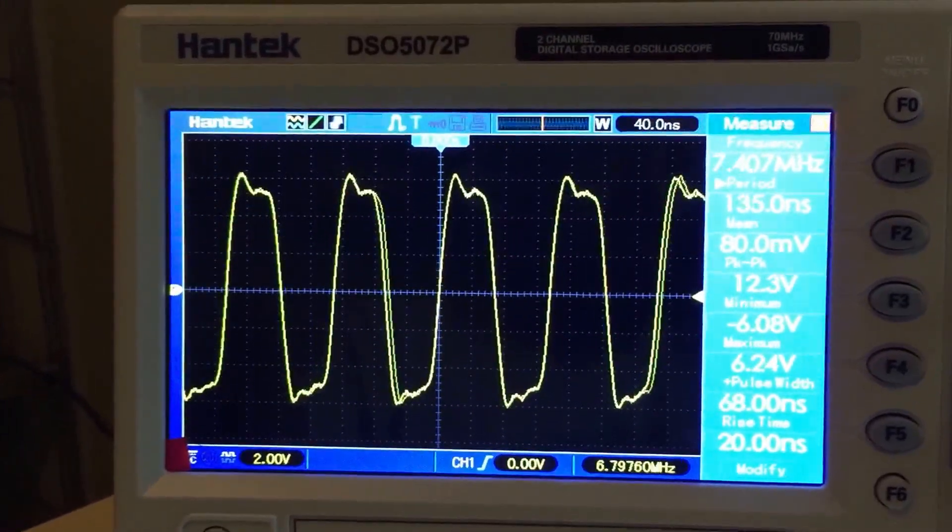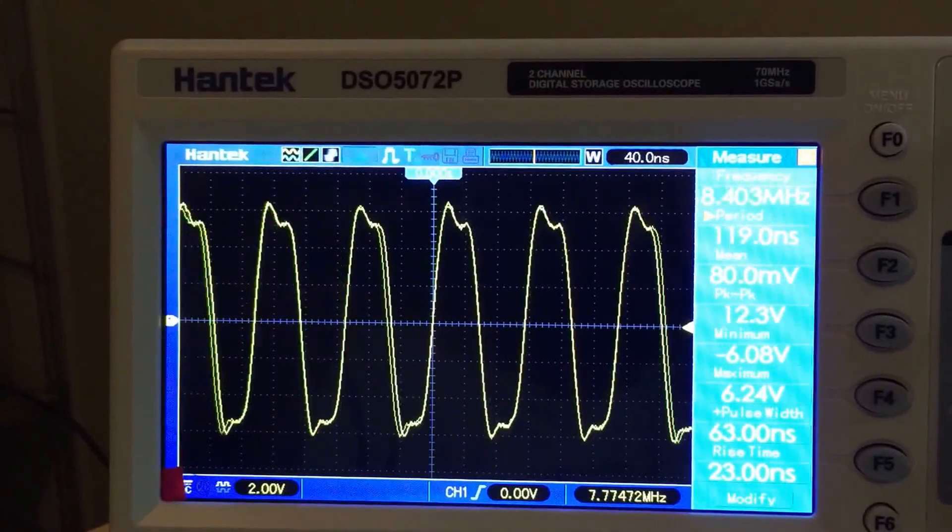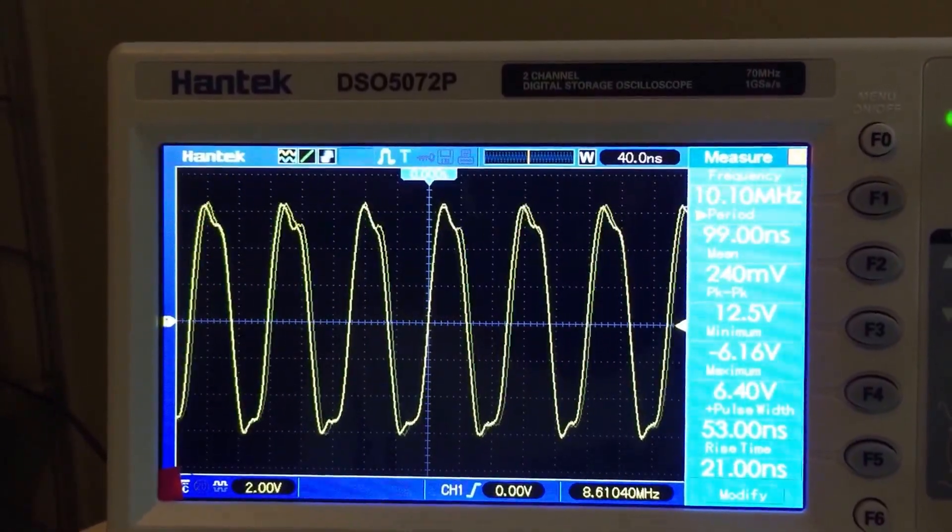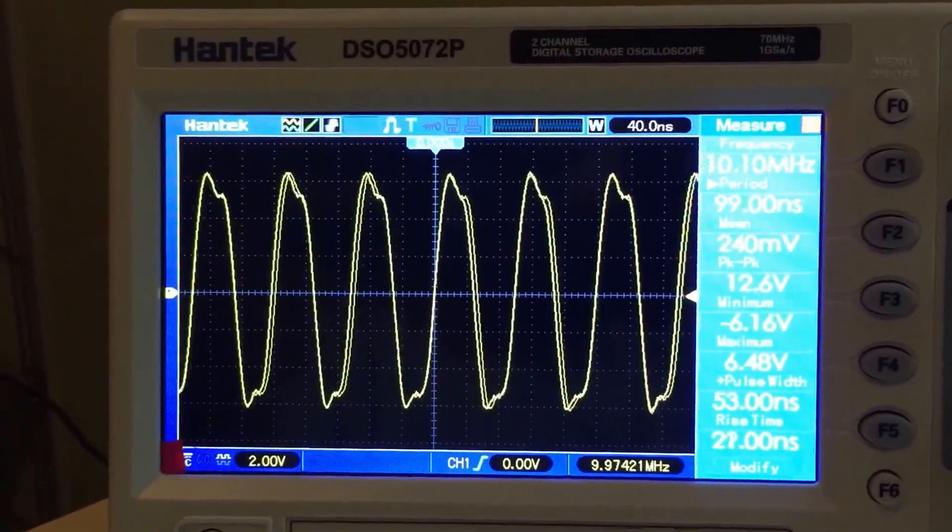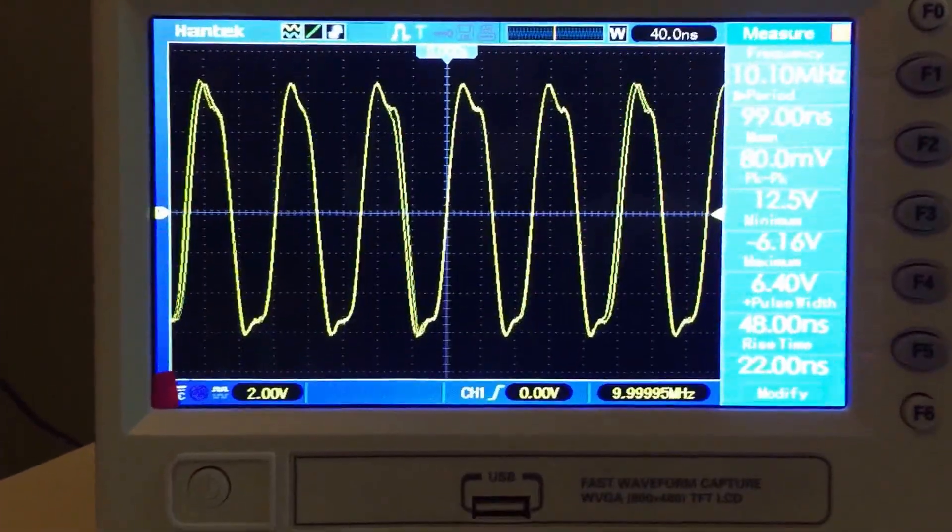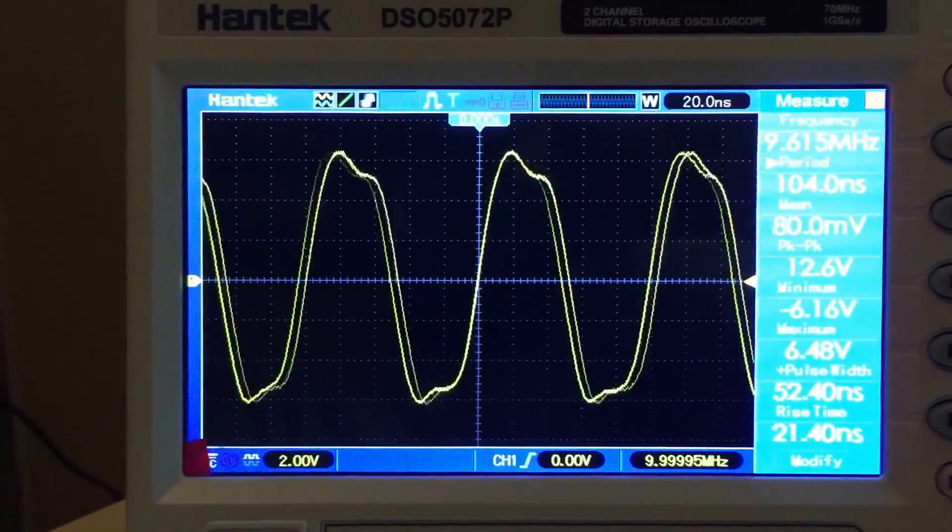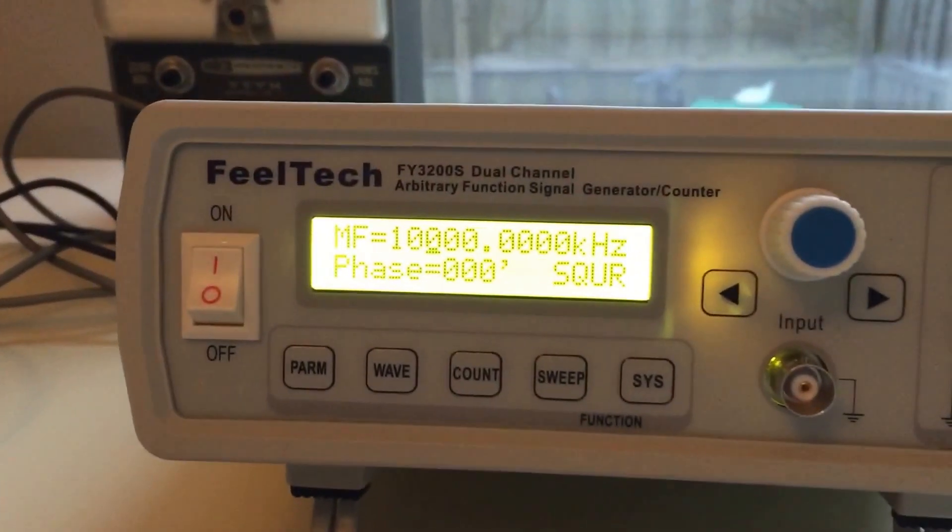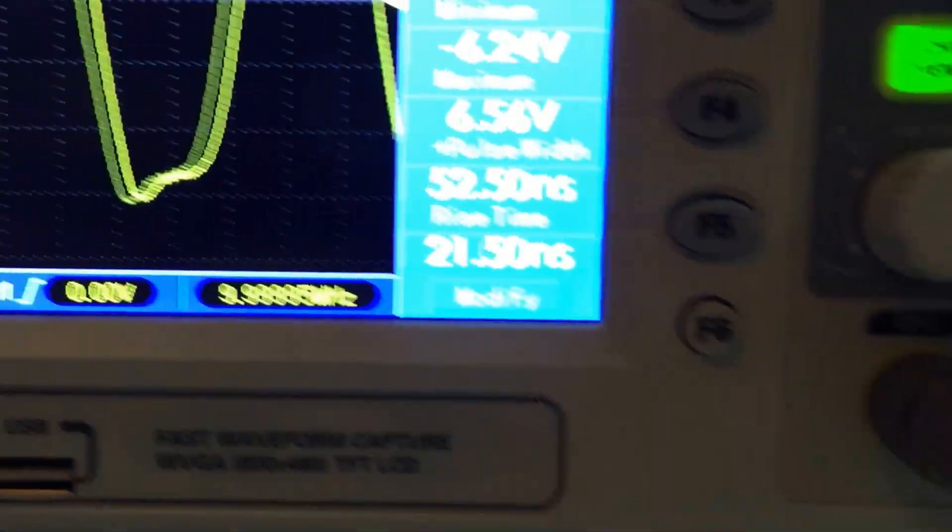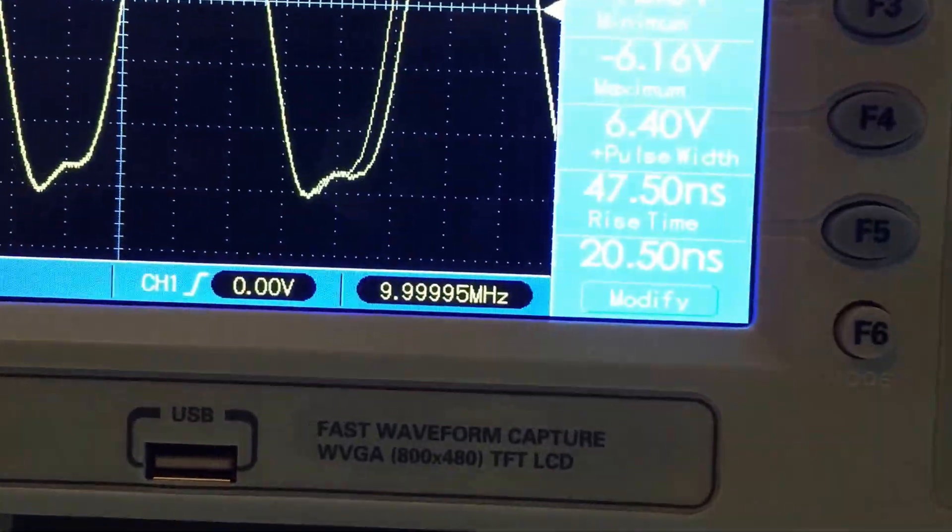I'm gonna bring it up to 10. Now this is half of the advertised bandwidth of this unit and this is what the square wave looks like at 10 megahertz. You can see that it does read because it's triggering right down the middle. It's still showing 10 megahertz, but that's what the square wave looks like.